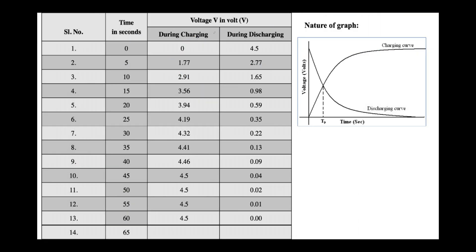Without stopping the clock, the voltmeter reading is noted for every 5 seconds. The voltage across the capacitor is recorded in the tabular column every 5 seconds. At 0 seconds, 0 volts; at 5 seconds, 1.77 volts; at 10 seconds, 2.91 volts, and so on. The trial is repeated until the capacitor is charged to maximum steady voltage of up to 4.5 volts.